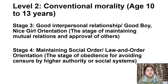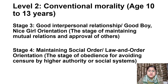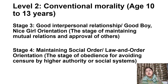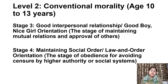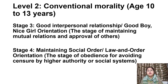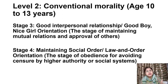Stage 4 is maintaining social order, law and order orientation. In this stage, the child blindly accepts rules and conventions because of their importance in maintaining a functioning society. Rules are seen as being the same for everyone, and obeying rules by doing what one is supposed to do is seen as valuable and important. Most active members of society remain at Stage 4, where morality is still predominantly dictated by an outside force — the social order.